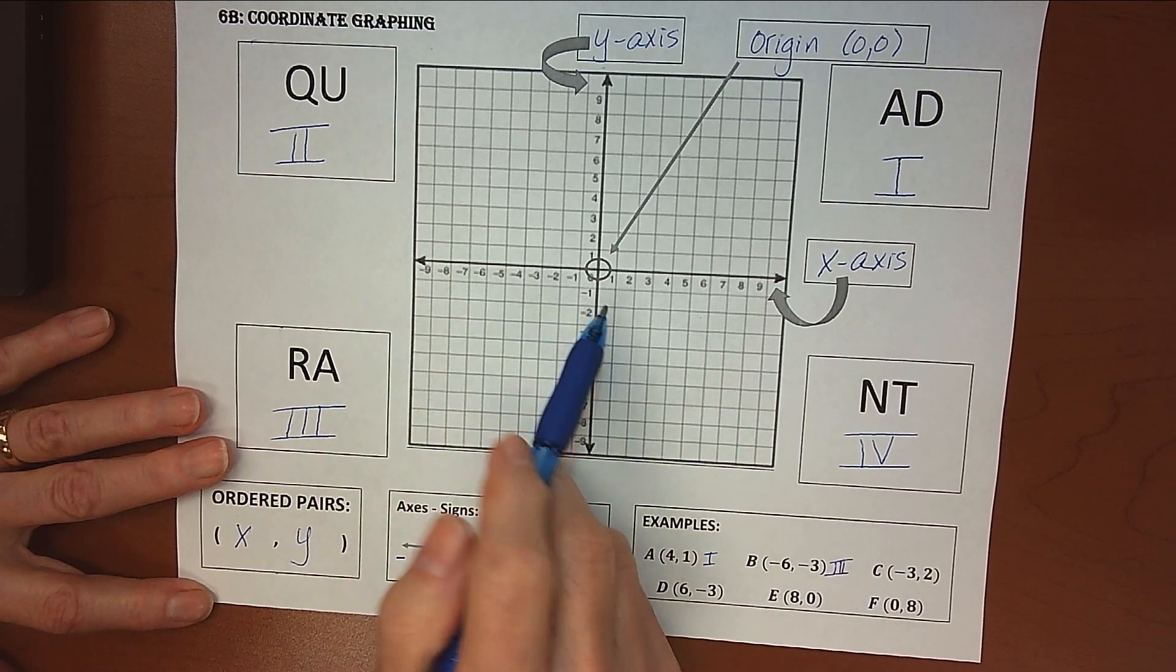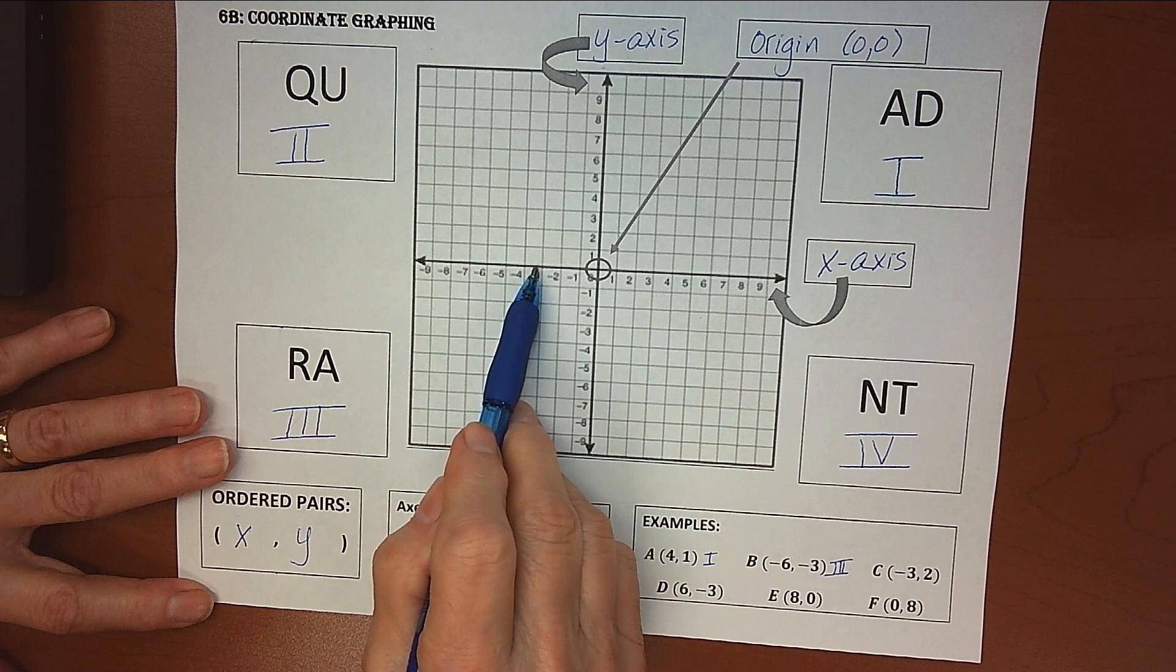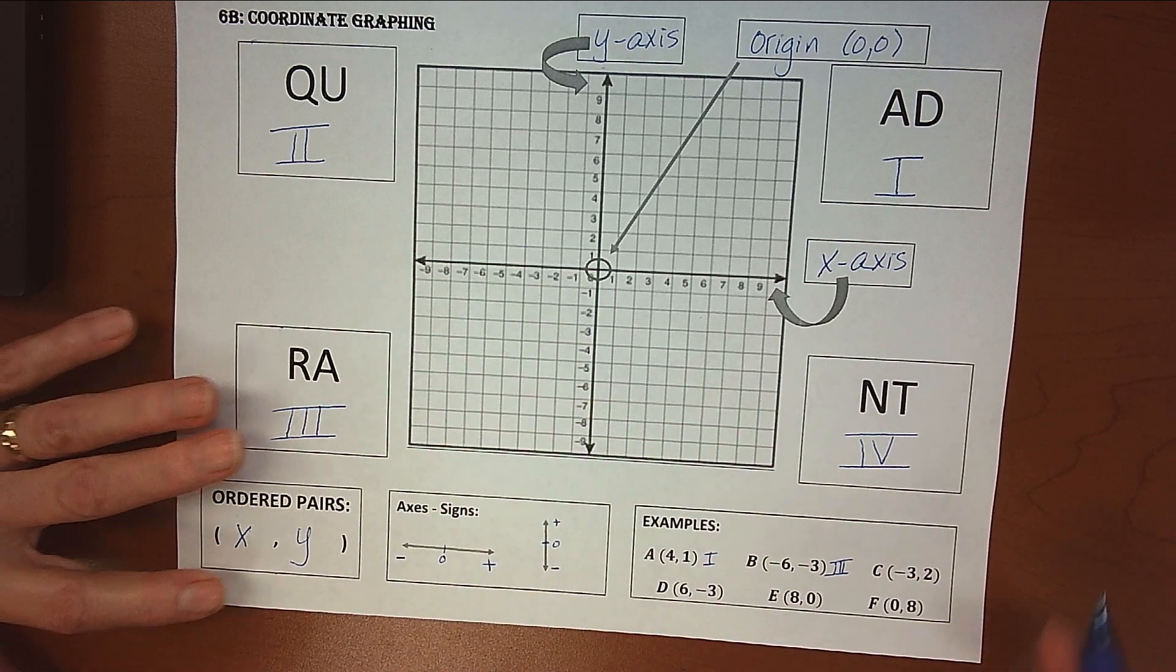And then negative 3, 2 tells us to go back 3 and up 2, and so that one falls into quadrant II.